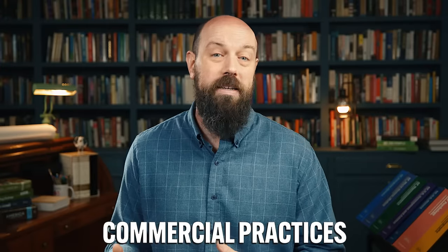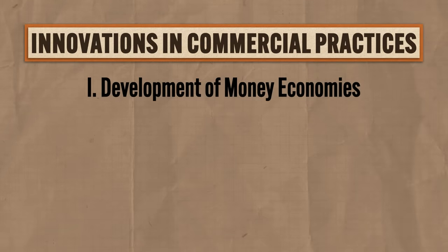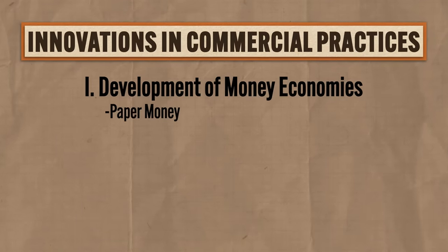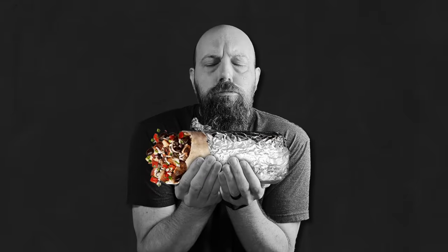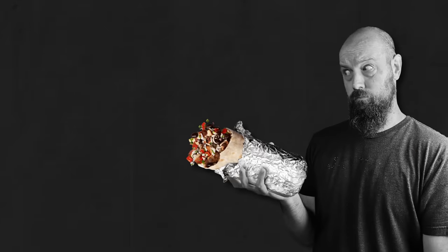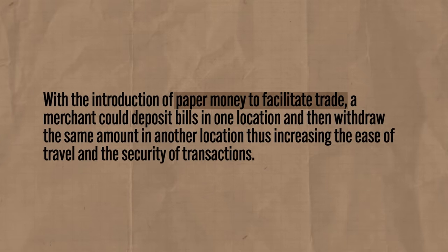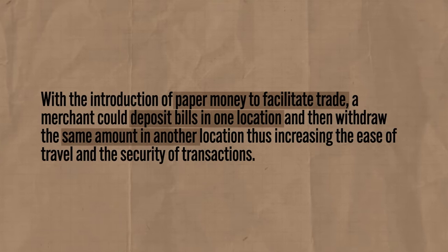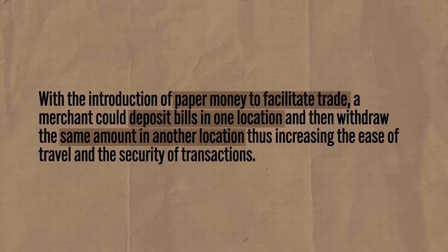Exchanges along the Silk Road grew in scope during this period because of innovations in commercial practices. First was the development of money economies, pioneered by the Chinese. They started using paper money to facilitate trade among various regions. A merchant could deposit bills in one location and then withdraw the same amount in another location, thus increasing the ease of travel and the security of transactions.